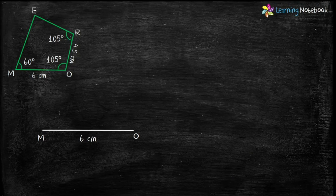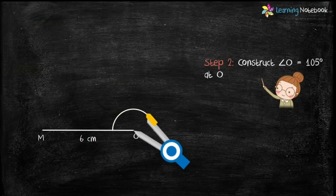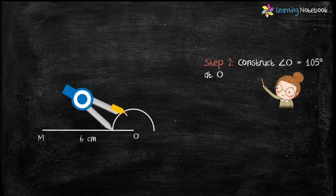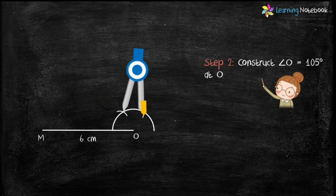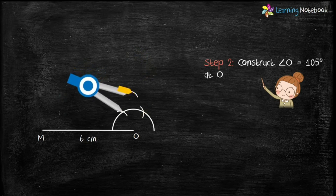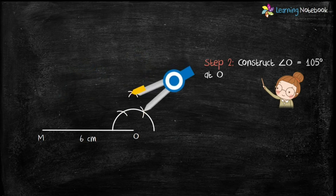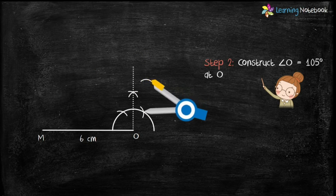Now let's construct angle O, which is given as 105 degrees. Students, you may refer to my separate video for the step-by-step construction of angle 105 degrees.